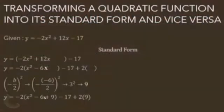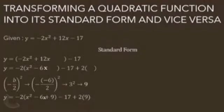Moving on, the quadratic function given is y equals negative 2x squared plus 12x minus 17. Based on our guide earlier, the first step is to group together the terms containing x, which are negative 2x squared and positive 12x.